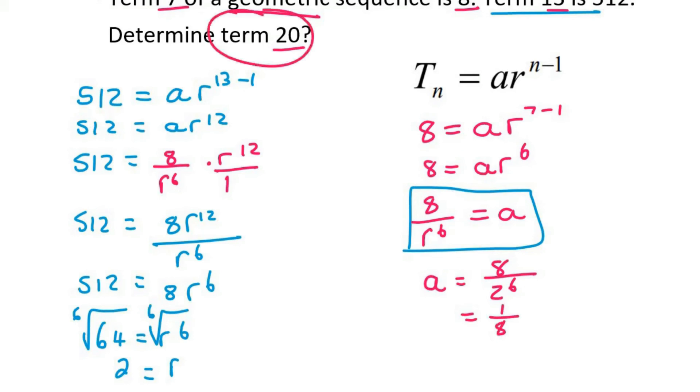Now the question says find term 20. So we just use this formula. Term 20 equals a, which we've now found as 1/8, times r (which is 2) to the power of 20 minus 1. Go ahead, type that in. And we get an answer of 65536.